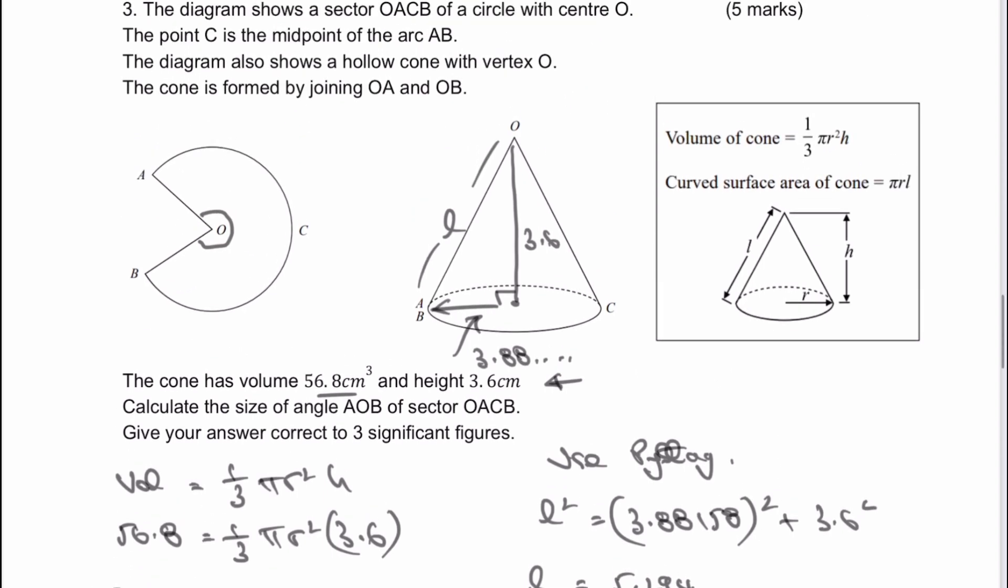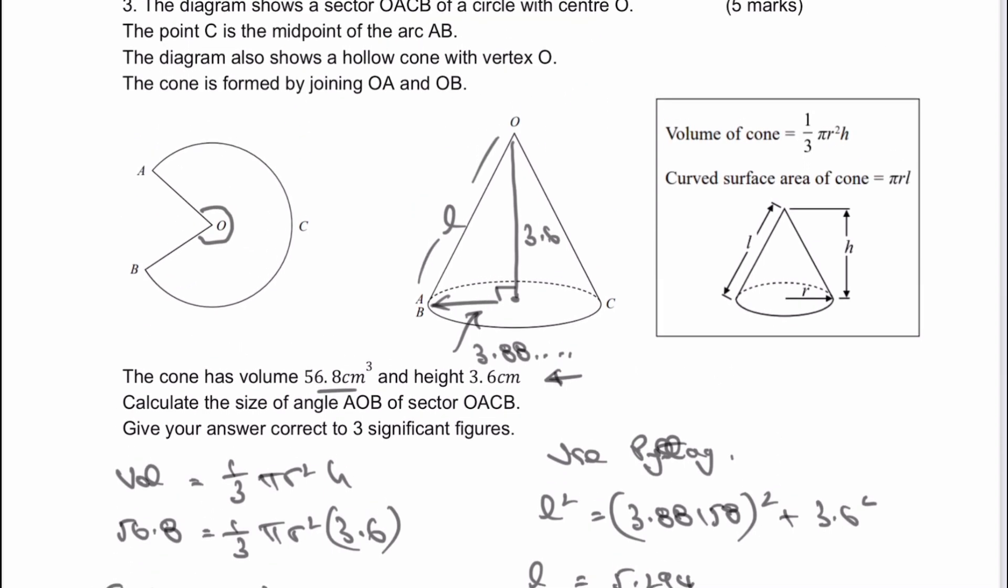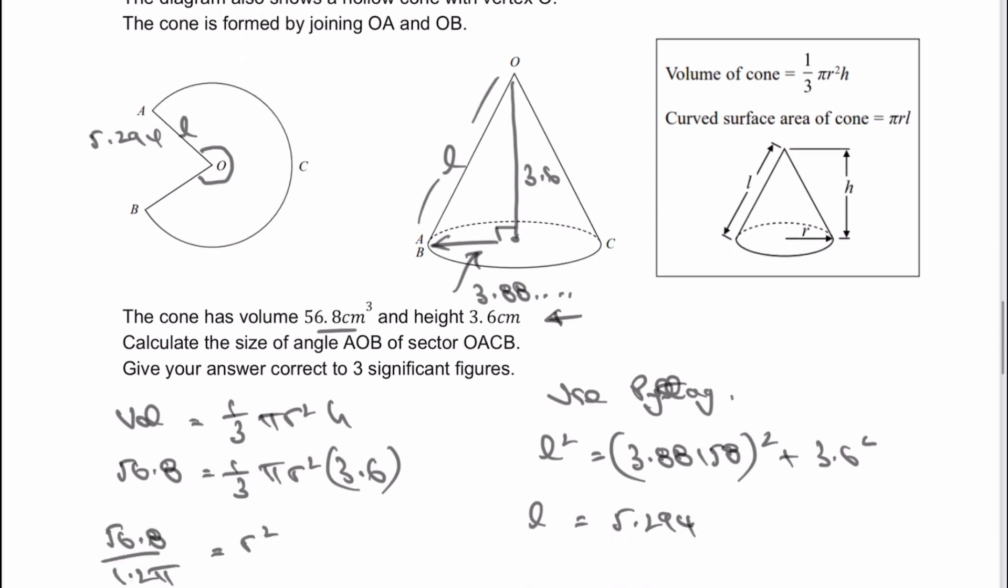Now what we're told is that the cone is formed by this particular shape here. That particular shape has actually got a radius of L, which is going to be 5.294 that we've just worked out. So now that we've got that, we can then use the surface area of the cone, or work out the surface area of the cone.